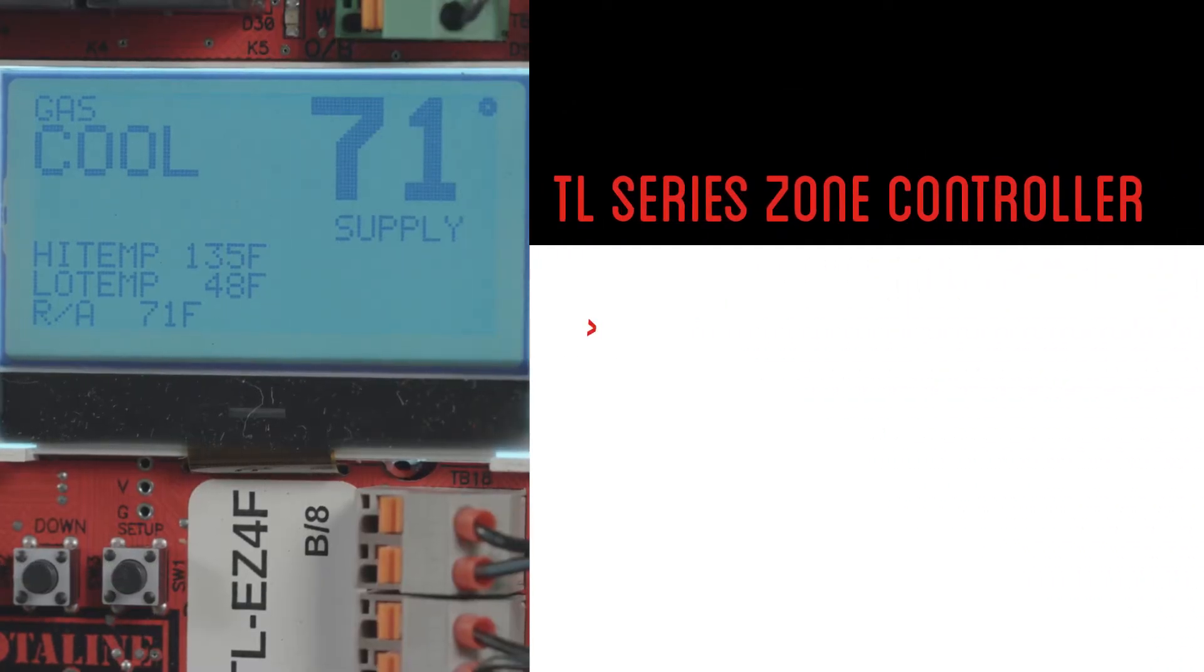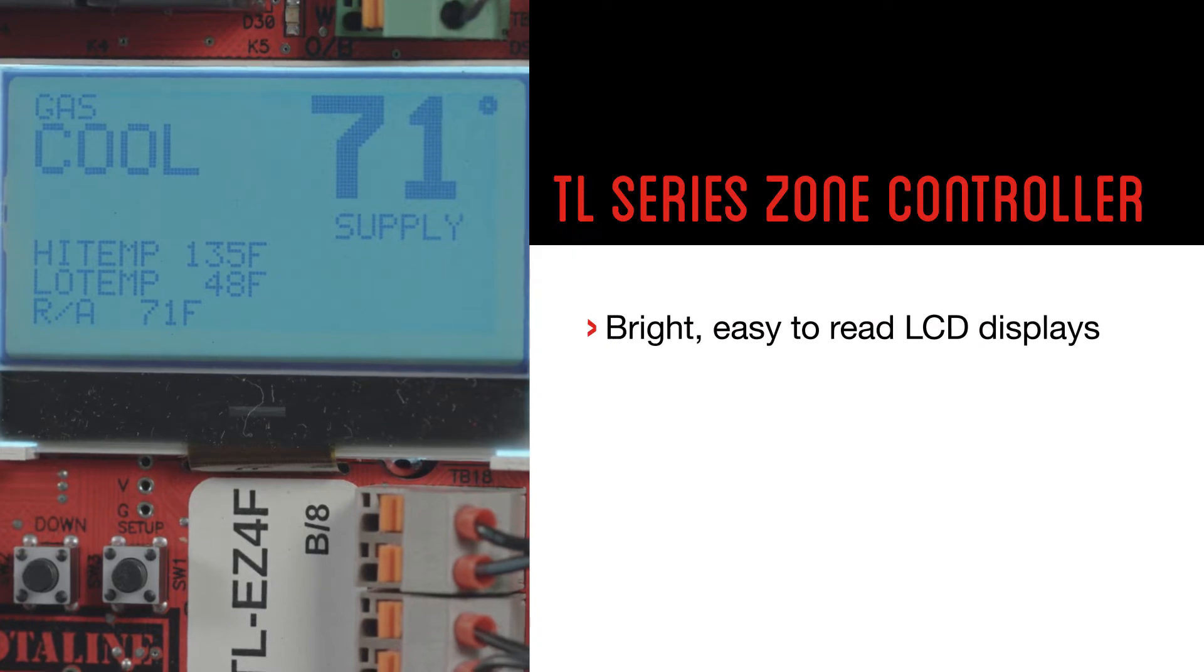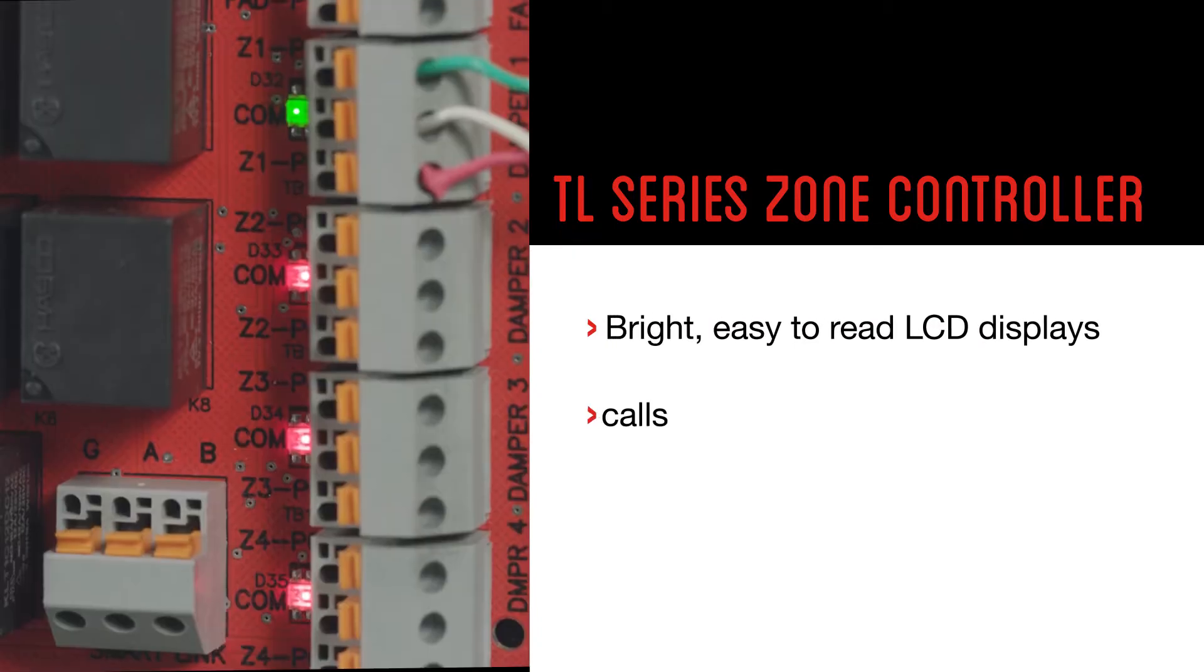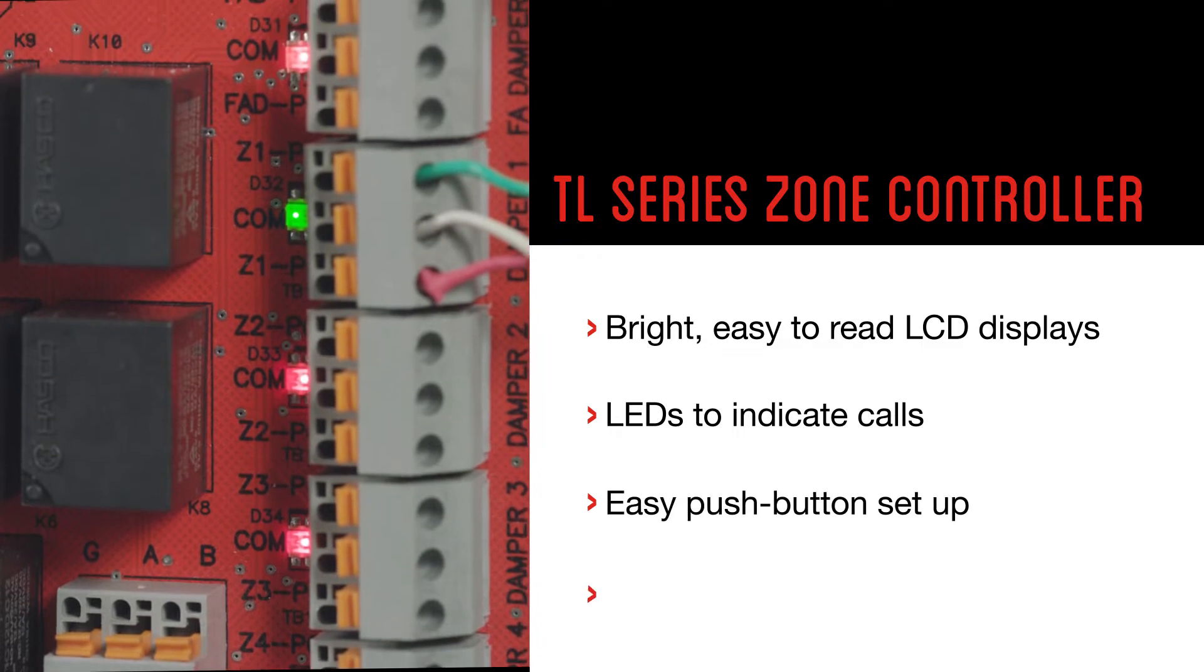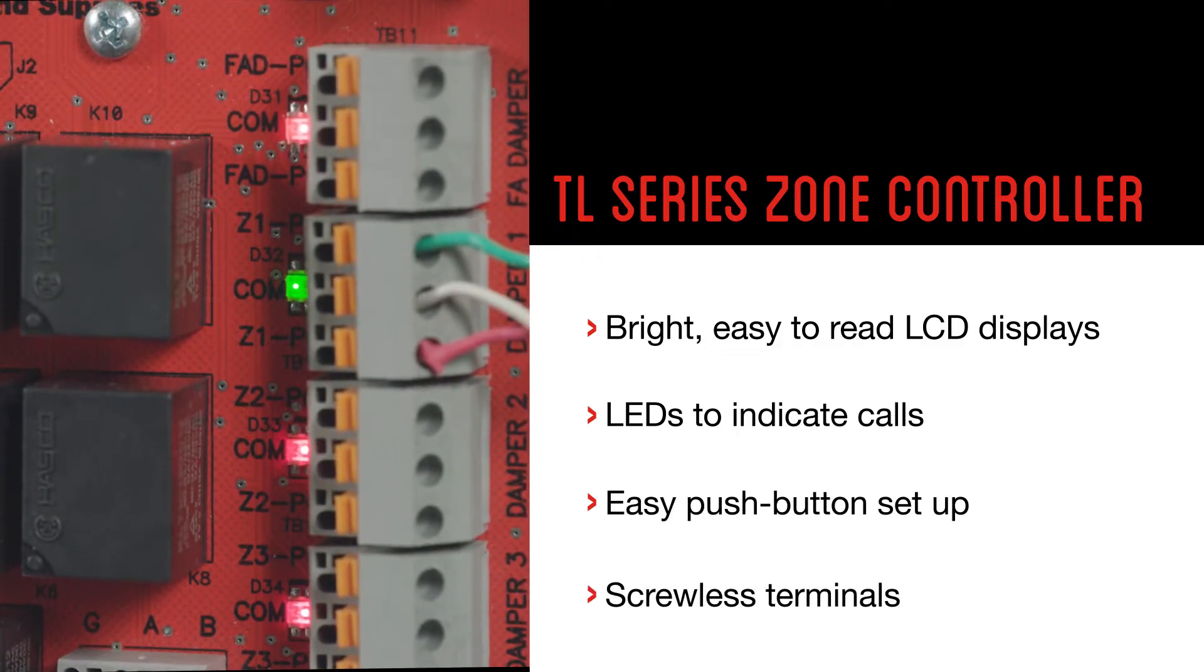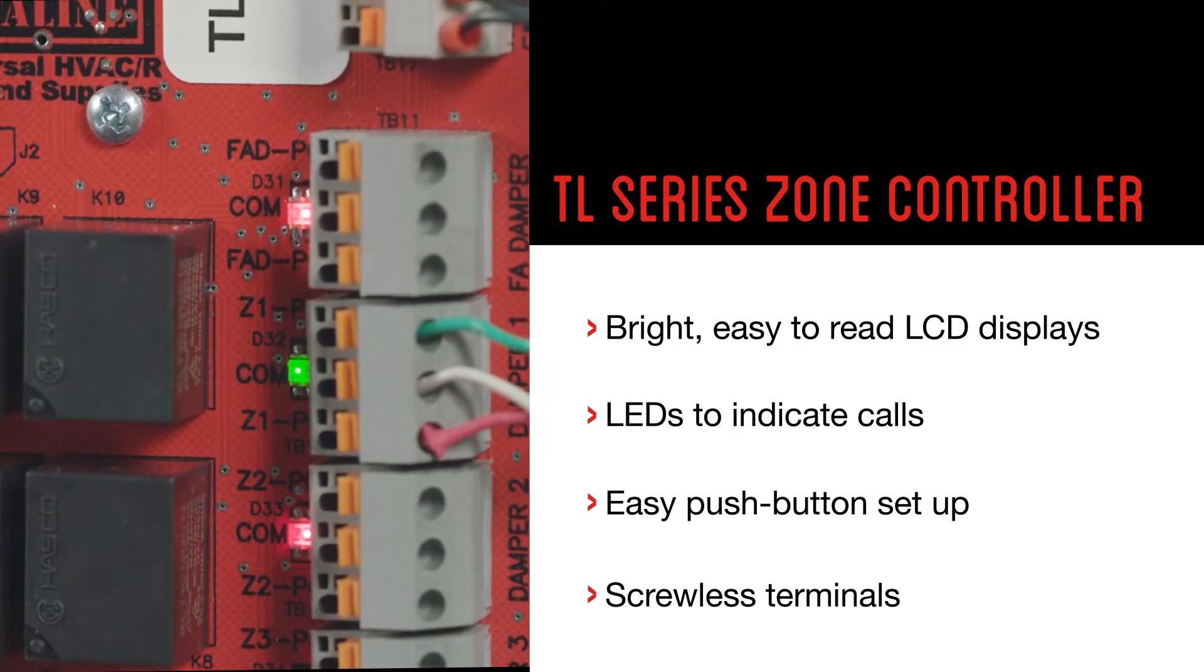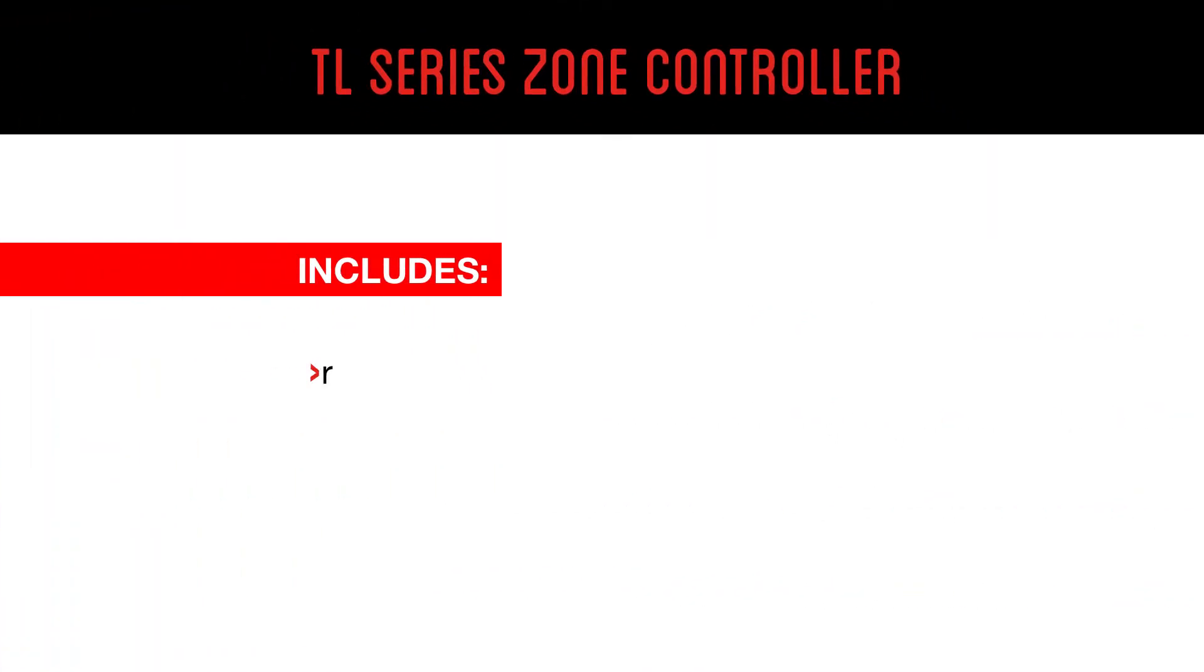All TotalLine TL series zone controllers feature bright, easy-to-read LCD displays, LEDs to indicate calls, easy push-button setup, and screwless terminals for ease in setting up and troubleshooting. TotalLine controllers come with a supply air sensor and a five-year warranty on both the controllers and the dampers.